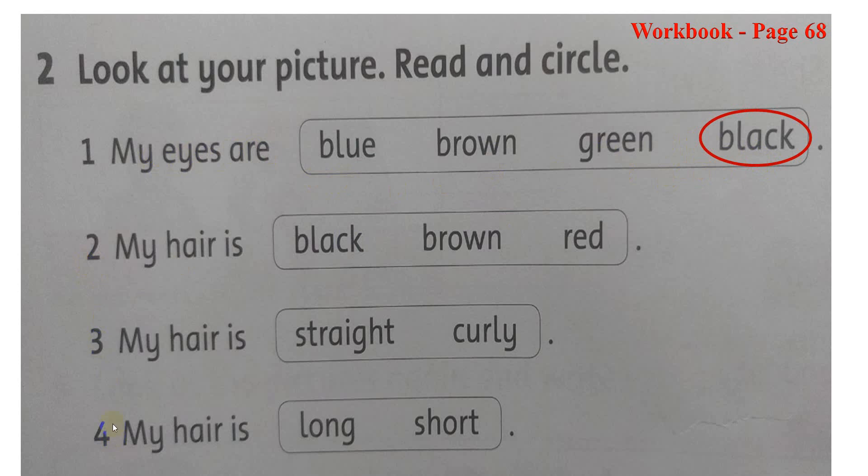Tương tự number 2, 3, and 4. Các con vẽ tóc của mình như thế nào? Chúng ta khoanh tròn đúng cái chữ đó. Ví dụ, thẳng hay quăn, dài hay ngắn. Và tô tóc của mình màu gì? Chúng ta khoanh tròn đúng cái màu đó cho cô hả? Bây giờ các con lấy bút ra. Chúng ta sẽ hoàn thành phần 2 cho cô nào.